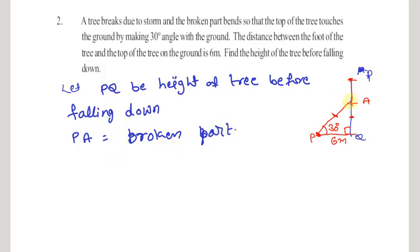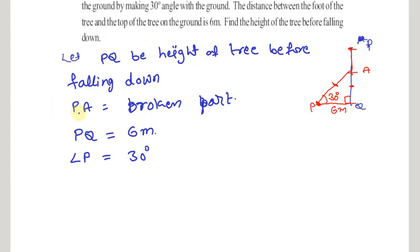PA bends towards the ground and the top is 6 meters from the foot of the tree, so PQ is 6 meters. PA makes a 30-degree angle with the ground, so angle P is 30 degrees. We need to find AQ and PA. With respect to angle P, we know the adjacent side and need to find the opposite side and hypotenuse.